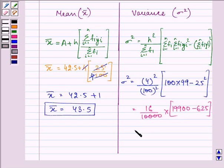That is further written as 16 upon 100,000 into 19275. And that is equal to 30.84.